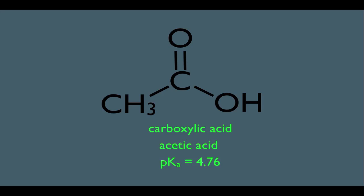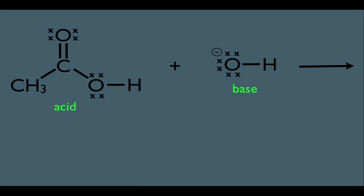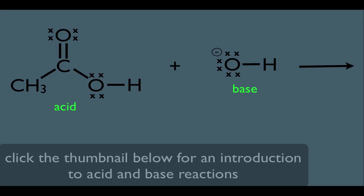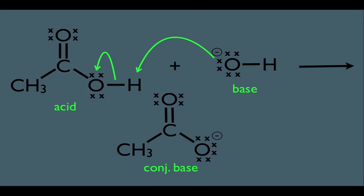If we have a carboxylic acid behaving as an acid, let's see what happens when we put it in solution with a base. From our previous lecture, we learned the Brønsted-Lowry definition — acids are H⁺ donors — and the Lewis definition — acids are electron acceptors. Notice the electrons on the base are being donated to the hydrogen on the acid; by definition, a Lewis base is an electron donor.